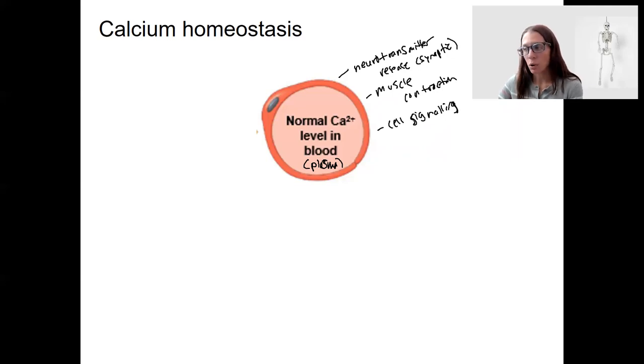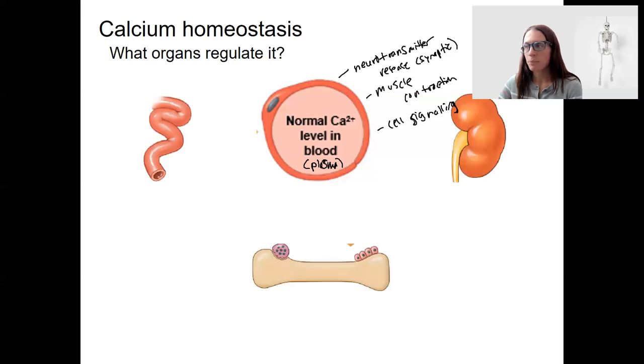And you already know there are three organs that do this. Here are the three organs: the intestines that can either absorb more or less calcium from the food you eat, the kidneys which can either make calcium go to your urine or stay in your body, in your bloodstream through reabsorption or secretion of calcium.